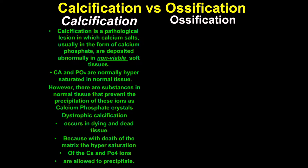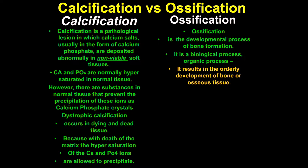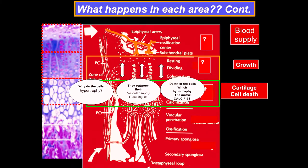What is ossification? It's an orderly, biological development process in bone formation. It results in the orderly development of osseous tissue—not calcified tissue, osseous tissue. It occurs in viable tissue; the tissue in bone is living.